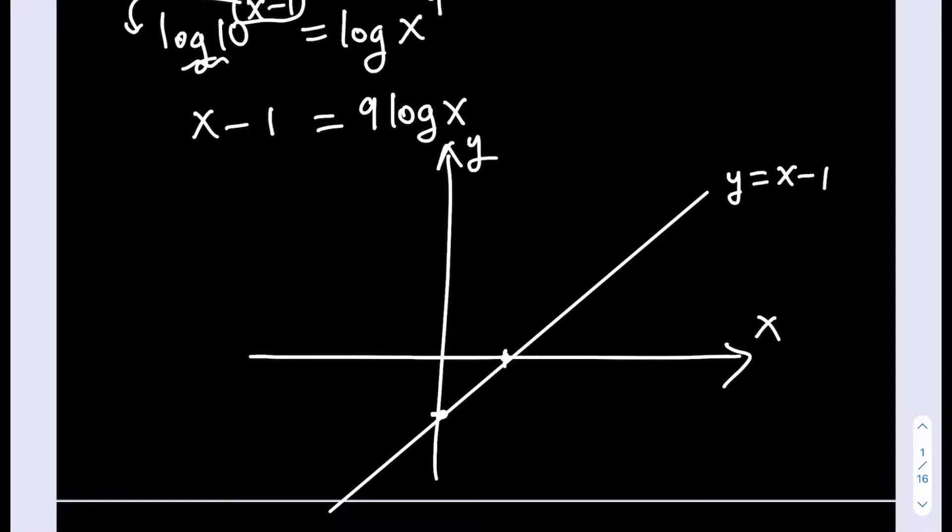And now we're going to be graphing 9 times log x. As you know, the graph of log x has an x intercept at 1, and then it kind of curves, and obviously there's an asymptote at x equals 0, which is the y-axis. When you multiply by 9, it's just going to make the graph sharper. It's still going to have the same x intercept, which is right here.